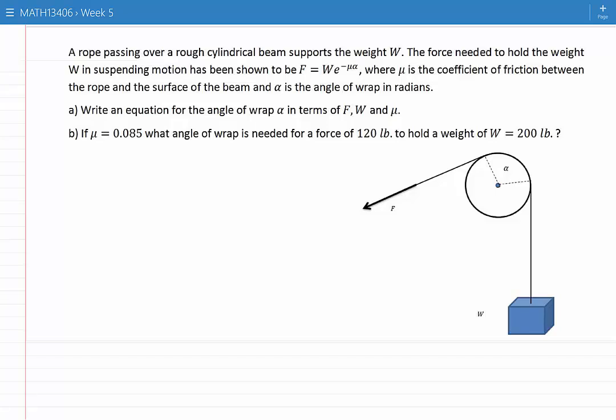Write an equation for the angle of wrap alpha in terms of F, W, and mu. Then if mu is 0.085, what angle of wrap is needed for a force of 120 pounds to hold a weight of W equal to 200 pounds?